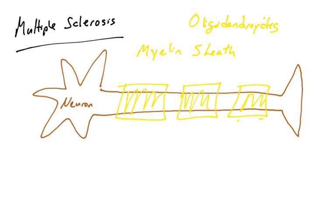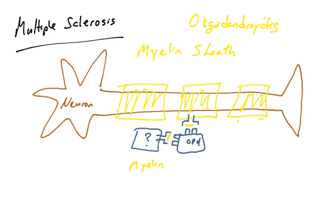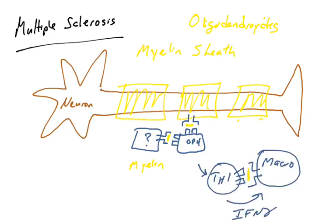That allows for the efficient transmission of action potentials down an axon. In individuals who suffer from MS, there are self-reactive, autoreactive T-cells which seem to recognize the protein myelin. Myelin is a self-protein — we shouldn't recognize it, but in some individuals they have an immune response to the myelin protein. It's not clear who is presenting myelin to CD4 T-cells, but those T-cells are becoming activated. It appears that in MS, it is the Th1 effector T-cell that is responsible for the immune reaction that destroys these myelin sheaths.